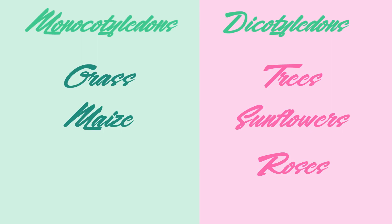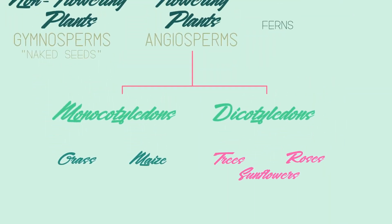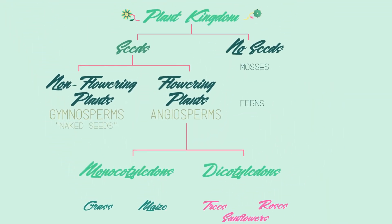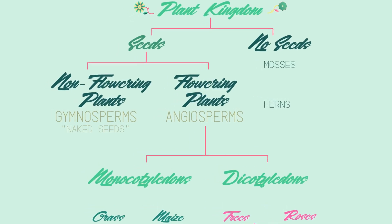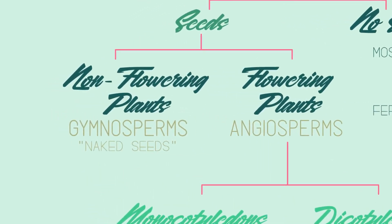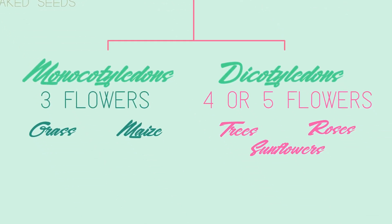So there we have some of the ways plants are classified. Remember that non-flowering plants are called gymnosperms and have naked seeds, while flowering plants are called angiosperms, which can be separated into monocots and dicots.